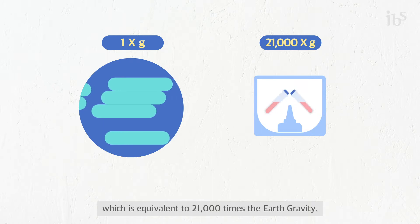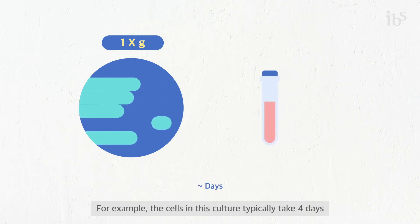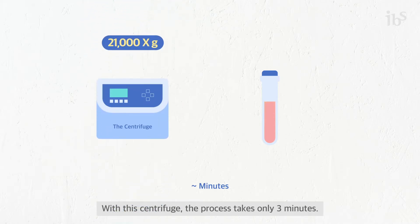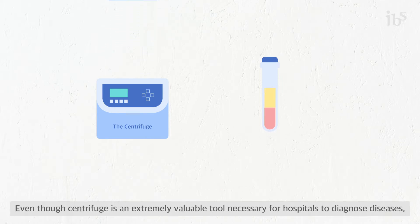This is equivalent to 21,000 times the Earth's gravity. For example, the cells in this culture typically take four days to settle down completely by natural Earth gravity. With this centrifuge, the process takes only three minutes.